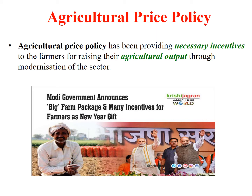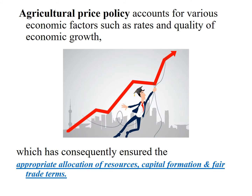What does Agricultural Price Policy exactly mean, and what does it provide? Agricultural Price Policy provides necessary incentives to the farmers for raising their agricultural output through modernization of the sector. Every year, the government announces certain schemes for the betterment of the farmer. Agricultural Price Policy accounts for various economic factors such as rates and quality of economic growth, which consequently ensures the appropriate allocation of resources, capital formation and fair trade terms.